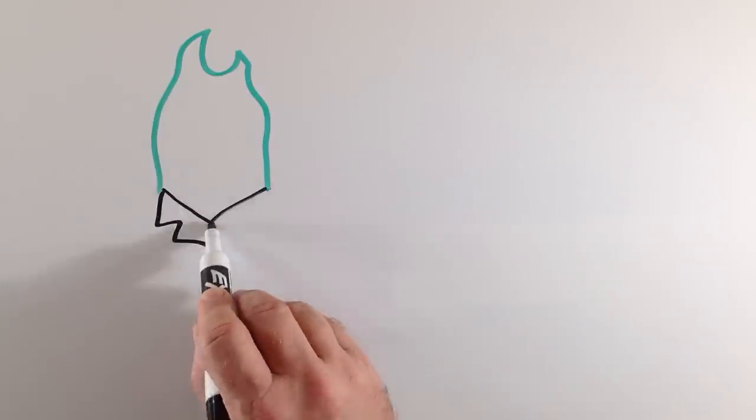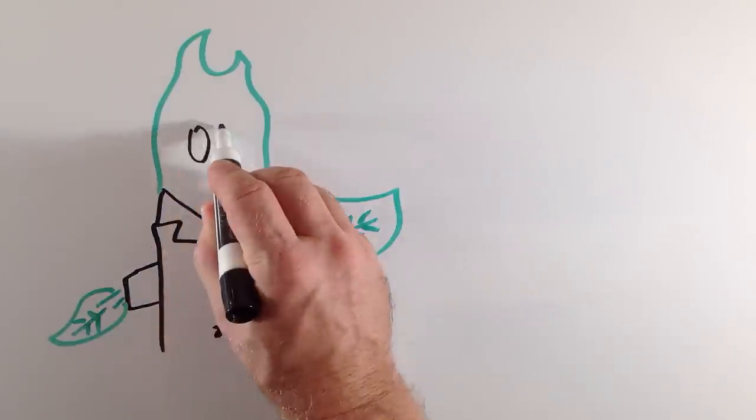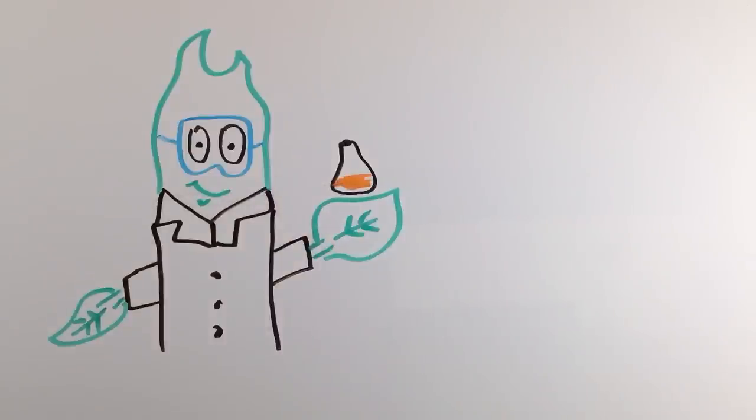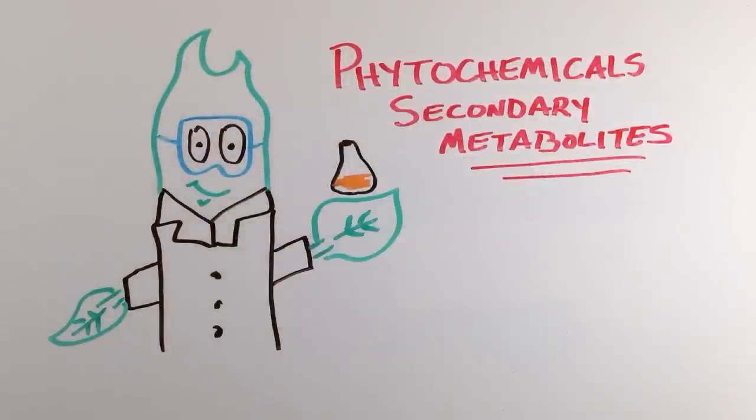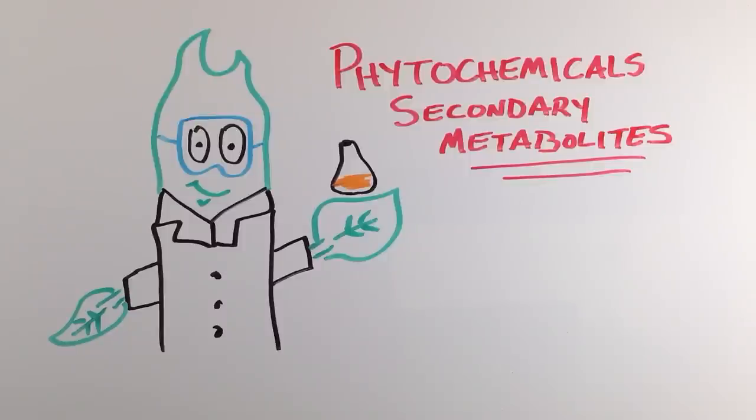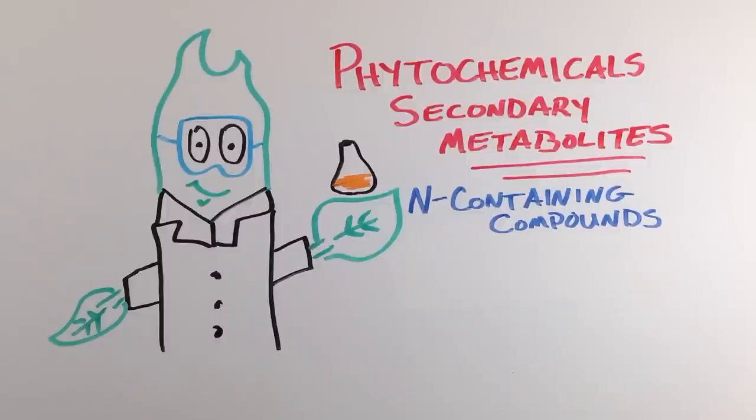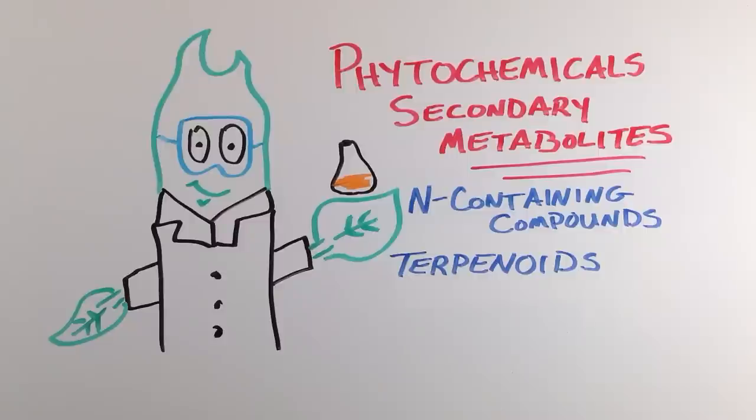Let's now take a look at the second group of defenses that plants use against herbivory. One of the amazing things about plants is that they're capable of synthesizing an astounding number of different chemical compounds as part of their normal metabolism. These chemical compounds are called phytochemicals or secondary metabolites because they're not directly involved in growth or reproduction. There are three categories of metabolites plants use. First are the nitrogen containing compounds. Second are terpenoids. The final group of chemicals are phenolics. Each of these have their own unique characteristics and effects on herbivores.